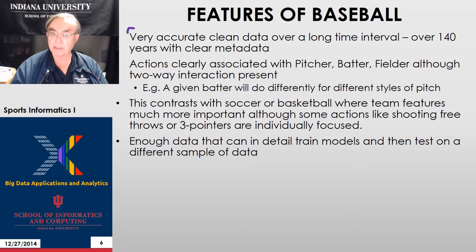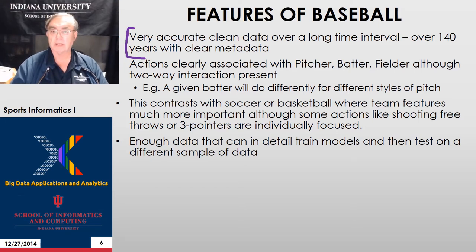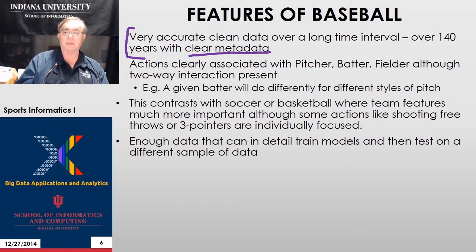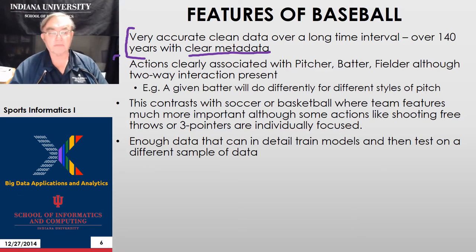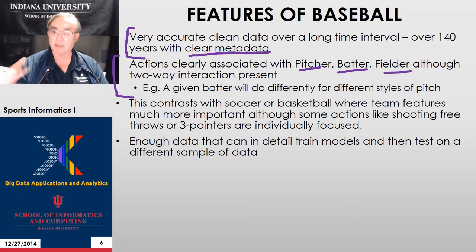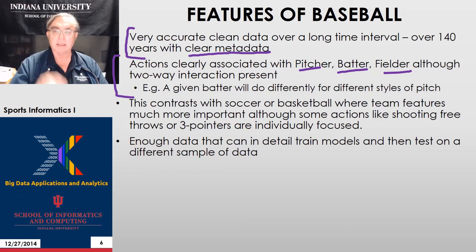So why is baseball chosen? It has very accurate, incredibly clean data. The scoring and recording of baseball games has been studied and become very well done over more than 140 years. The metadata is clear — you know the teams and the players — so everything is very clean. Baseball data is at most two-way, and usually one-way: there's a pitcher who controls the speed of the pitch, a batter who takes a pitch in a certain region and hits it or not, and a fielder who may or may not catch it. You can analyze the hit and the pitch separately.